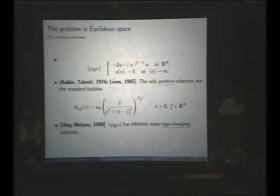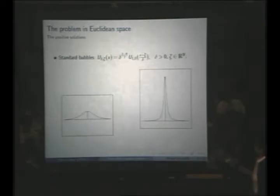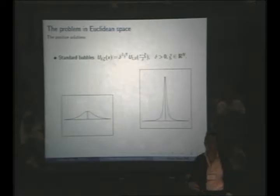The only thing one can really deal with are the positive solutions. Since this is ℝⁿ times (0,∞), this whole set of solutions — the ground state solutions — is not compact. If you take the instanton centered at the origin with delta equal to one, every other instanton is just a translation and dilation of it. So up to translation and dilation, there is essentially only one standard bubble.